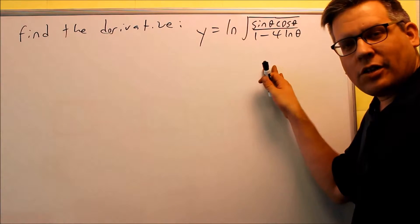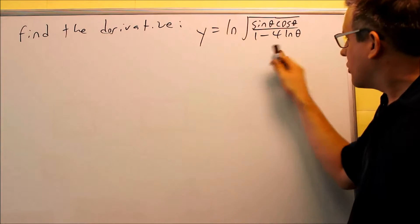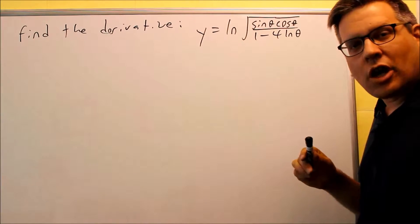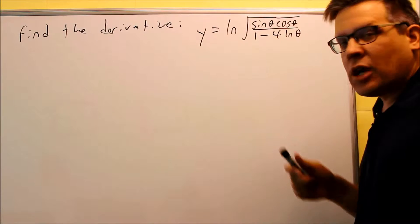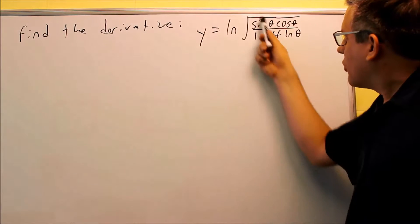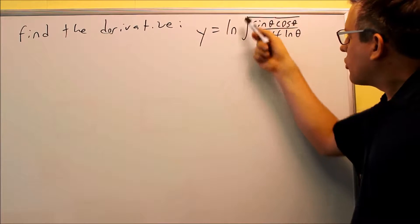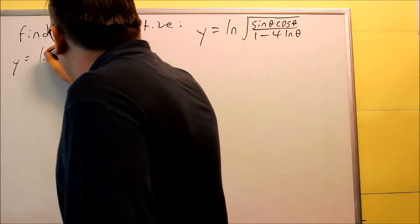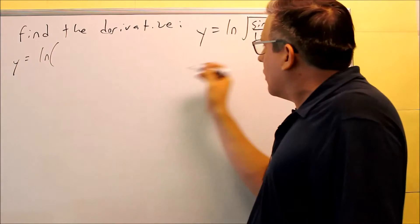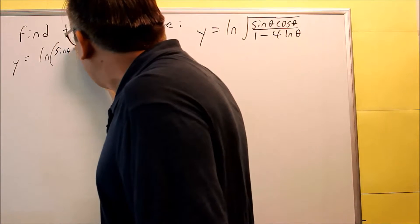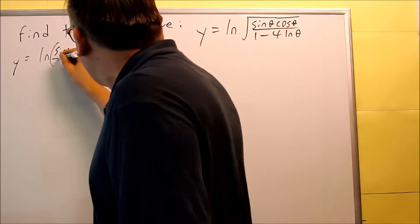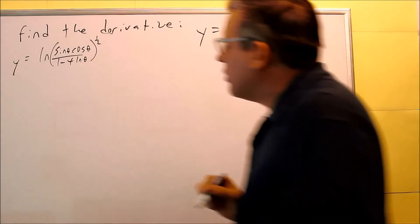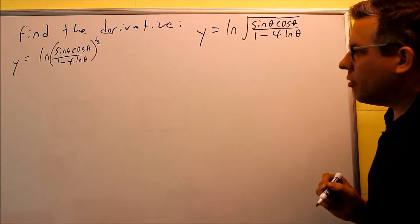This problem we're going to do again by applying the log properties first. This looks like a really complicated problem, and it would be if we didn't use log properties, but we are going to use them to break this up. The first thing we notice is the square root can be written as a 1/2 power. So I have natural log of sine theta cosine theta over 1 minus 4 natural log of theta, all written to the 1/2 power.